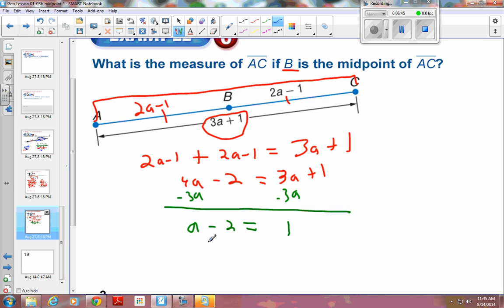Next thing I need to do is get rid of the 2, so I'm going to add 2 to both sides. And then you get A is equal to 3.